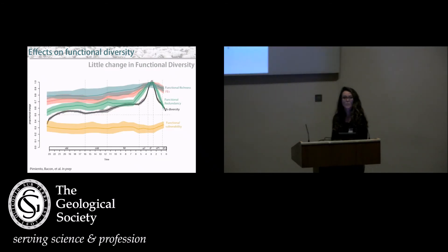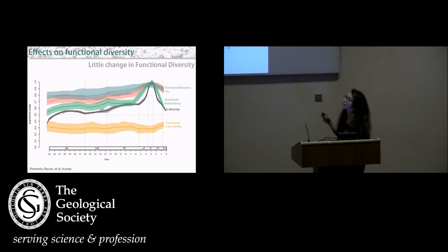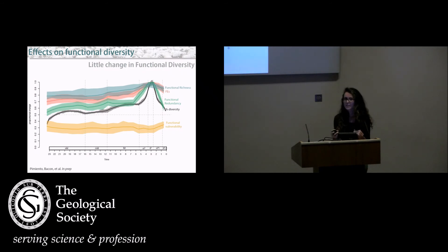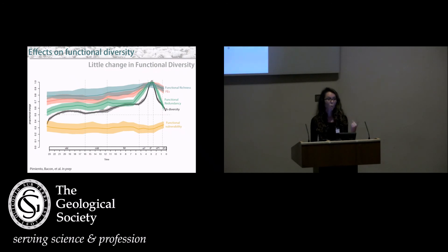Most interestingly, when we compare this with functional diversity, we see that by the Pliocene we reach maximum levels of proportional diversity, and then we lose 49% of biodiversity in the Quaternary. However, the functional space and functional richness don't experience any dramatic changes, nor does the number of functional entities. We do see a drop in functional redundancy — which makes sense since that's the number of species per function — but the functional vulnerability doesn't change much, if anything slightly increases at the end.